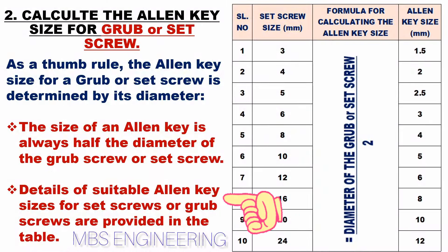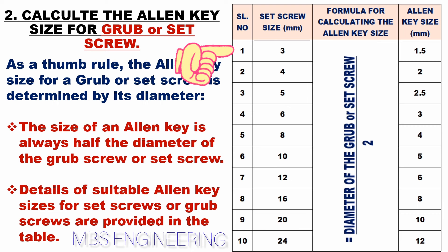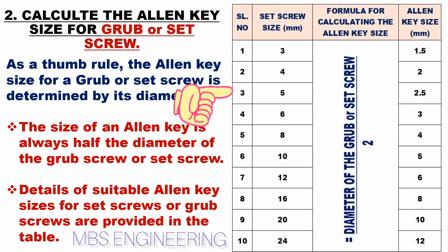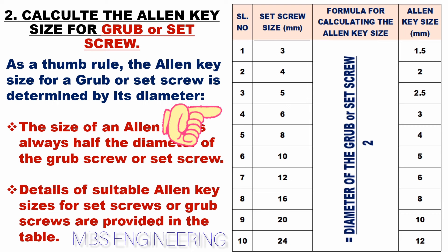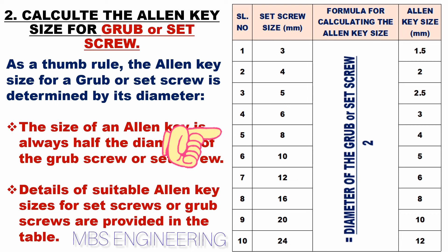We will learn the suitable allen key sizes for set screws or grub screws from the table. For a set screw of 3 mm, the suitable allen key size is 1.5 mm. For 4 mm, the allen key size is 2 mm. For 5 mm, the allen key size is 2.5 mm. For 6 mm, the allen key size is 3 mm. For 8 mm, the suitable allen key size is 4 mm.